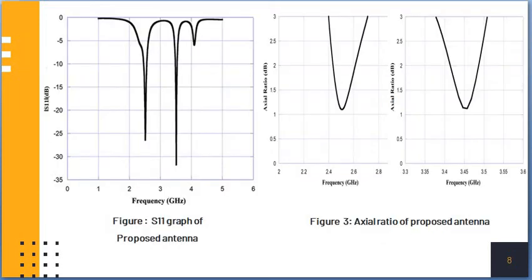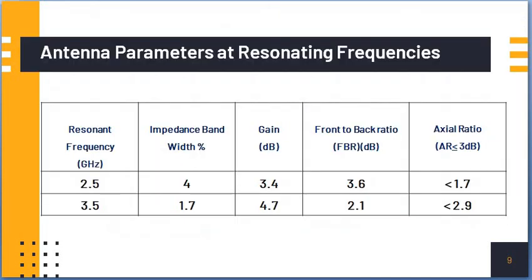This is the S11 graph and the axial ratio of the proposed antenna. The return loss is greater than minus 25 dB and good impedance matching is observed. And for axial ratio, both the bands 2.5 GHz and 3.5 GHz are having good axial ratio under 3 dB.